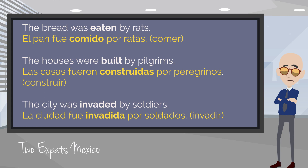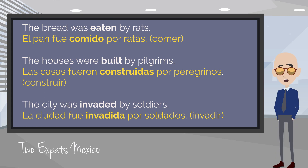The houses were built by pilgrims. Las casas fueron construidas por peregrinos. The verb is construir. It's las casas — feminine plural — so we have to have construidas. Our last one: The city was invaded by soldiers. La ciudad fue invadida por soldados. It comes from invadir, which means to invade, and it's invadida because la ciudad is feminine and singular.